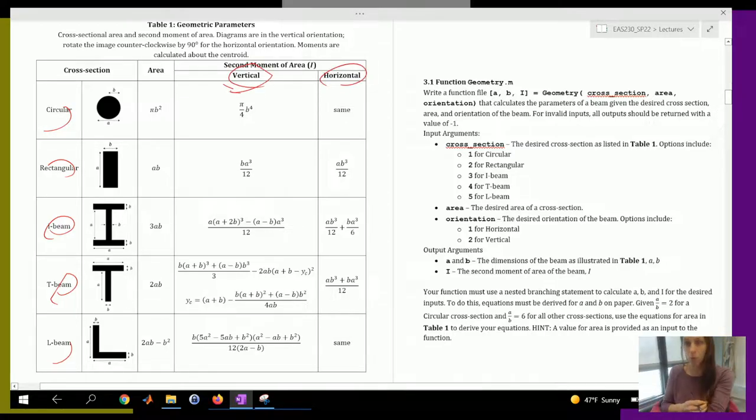For invalid inputs, all outputs should return with the value of negative one. So if anything is invalid, it should be negative one.